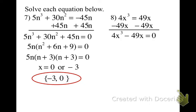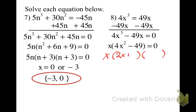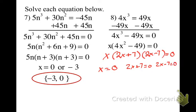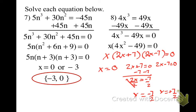Even though there are only two terms, I still subtract 49x to get everything to one side, keeping the higher-exponent term positive — that makes it easier to factor. Then we GCF out an x. Anthony identifies what's left inside as a difference of squares, so we factor to get x times 2x minus 7 times 2x plus 7 equals 0. So x equals 0; from 2x plus 7 equals 0, x equals negative 7 over 2; and from 2x minus 7 equals 0, x equals positive 7 over 2.